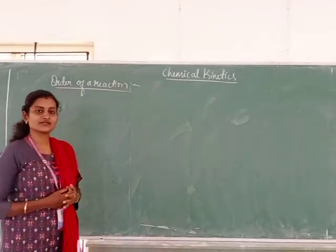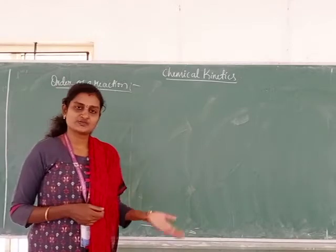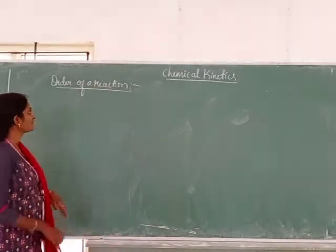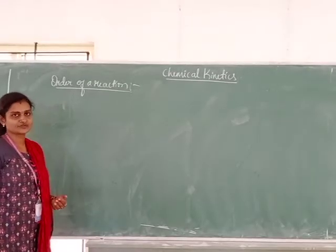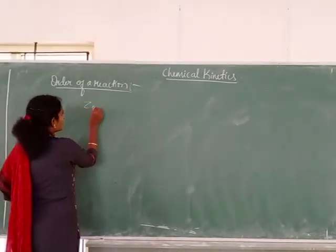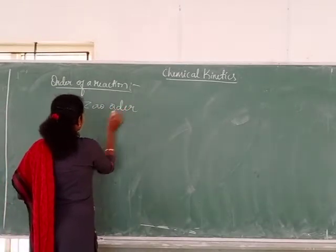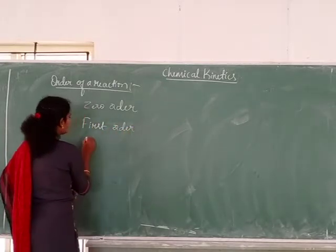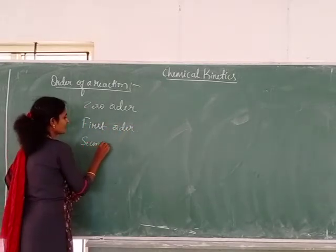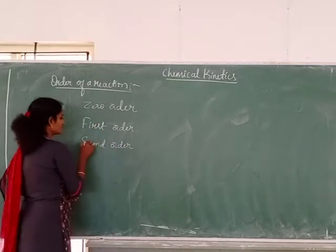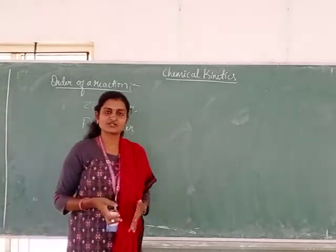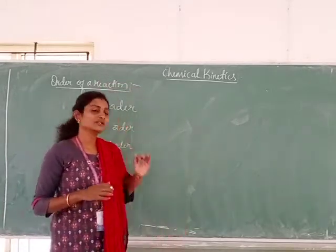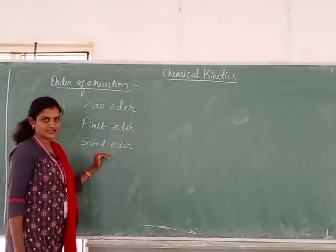That is based on the formula: rate is equal to K into the respective molar concentration of the reactants with its powers. So order of the reaction, as you all know, there are three types: zero order reaction, first order reaction and second order reaction. Order may be zero, fraction, decimal or a whole number, but more than three it is unlikely.